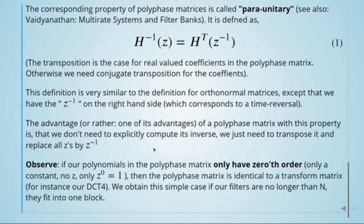Observe: if our polynomials in the polyphase matrix only have 0th order — only constants, no Z, only Z to the power of 0 which equals 1 — then the polyphase matrix is identical to the transform matrix. For instance, in the case of our DCT-4. We obtain this simple case when our filters are no longer than N and they fit into one block.